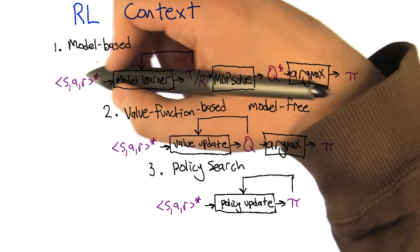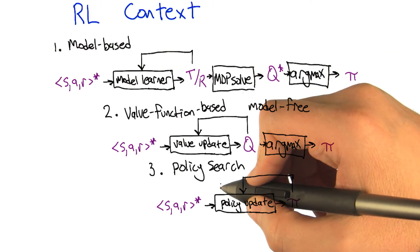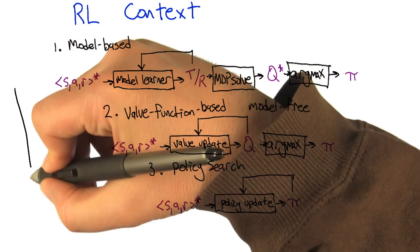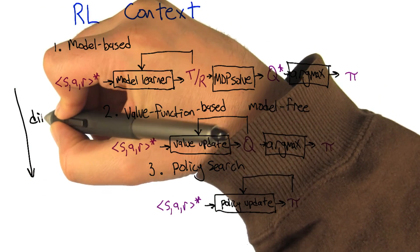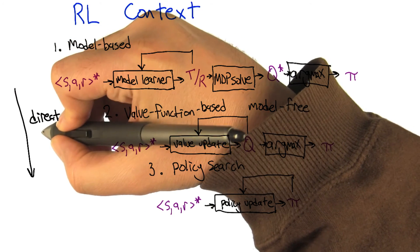So here's these three models all together so you can compare and contrast. And you can see in some sense, they're getting simpler as we go down to policy search. But you could also say that the learning is more direct.